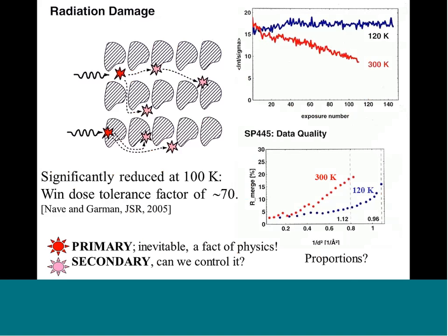At 120K, if you look at the exposure number, the intensity stays high, whereas the equivalent experiment at 300K would decay away. What's plotted on the y-axis there is I over sigma I. You can also see that at 120K, you can collect higher resolution data than at room temperature. This is because you've got longer to collect before the side chains are damaged at 100K, rather than the crystal diffracting better intrinsically at 100K.